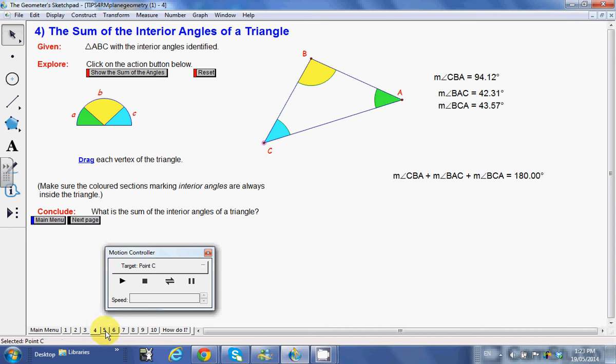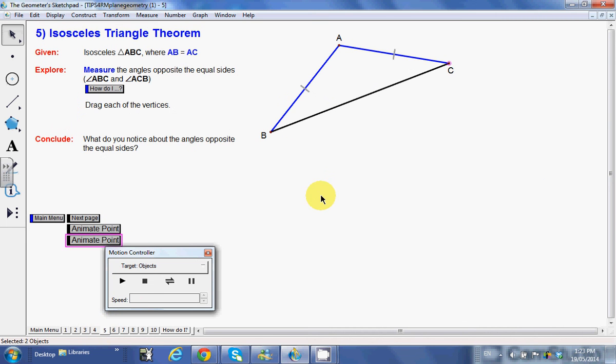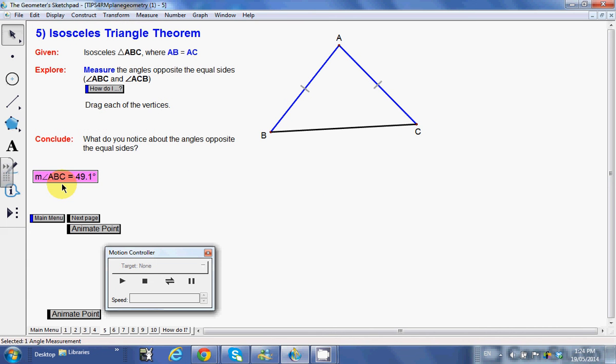Another kind of neat one here. What we have here is an isosceles triangle because we have two sides equal. So you may remember what happens with angle B and angle C here.